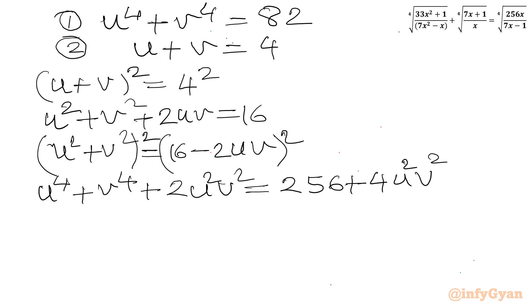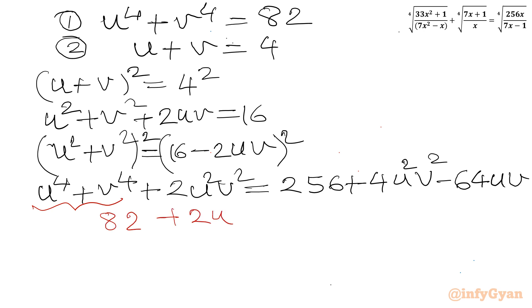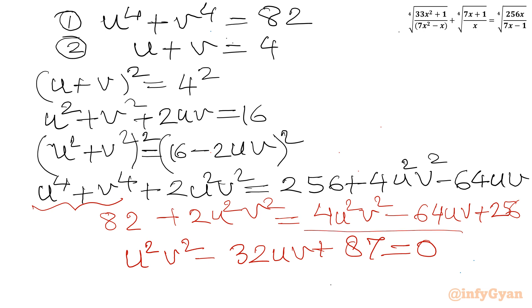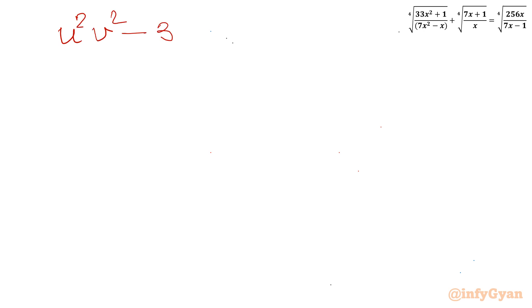Plugging in u⁴ plus v⁴ equals 82 into the left-hand side, I get 82 plus 2u²v² equals 4u²v² minus 64uv plus 256. Simplifying, I get the quadratic equation: u²v² minus 32uv plus 87 equals 0. Factoring 87 as 29 times 3, the equation factors as (uv minus 3)(uv minus 29) equals 0. So uv equals 3 or uv equals 29.